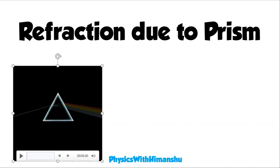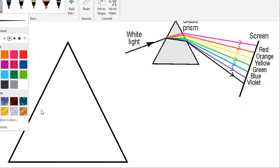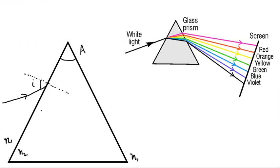Let us understand the meaning of incident ray, reflected ray, and emergent ray. Suppose this is the angle of prism — it is also called the refracting angle. Suppose this is the incident ray. At this point you have to draw a normal. This is the angle of incidence i. The refractive index outside is n1 and inside is n2, and n2 is greater than n1. So light will bend towards the normal since it is traveling from rarer to denser medium. Suppose light travels like this — this is the refracted ray and this is the angle of refraction r1.